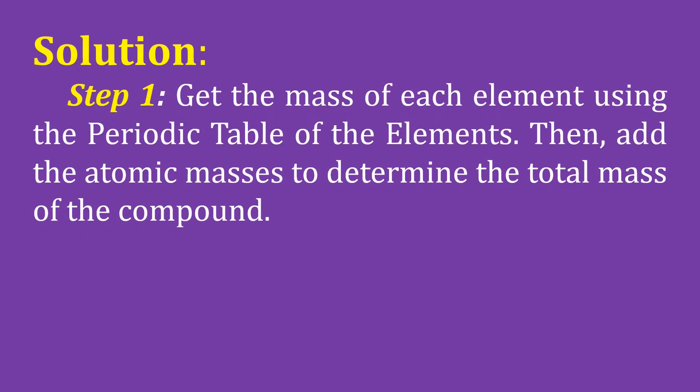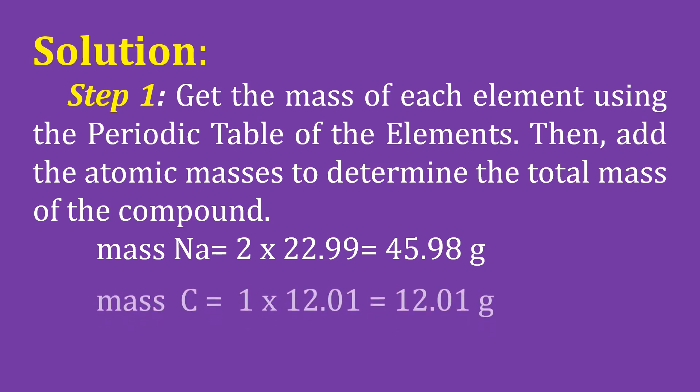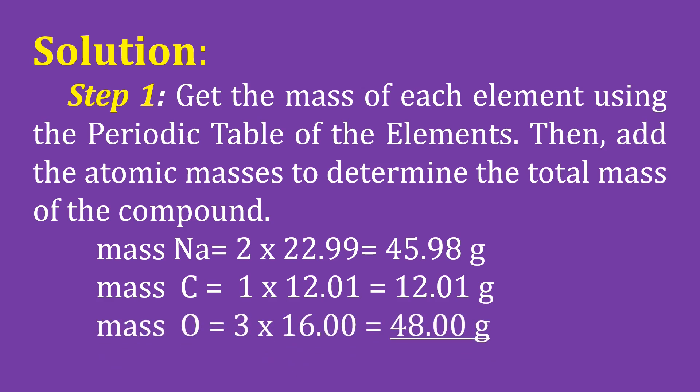Step 1: Get the mass of each element using the periodic table of the elements. Then add the atomic masses to determine the total mass of the compound. Mass of sodium: 2 times 22.99 equals 45.98 grams. For the mass of carbon: 1 times 12.01 equals 12.01 grams. And for the mass of oxygen: 3 times 16 equals 48.00 grams. We need to add all the atomic masses, then we have the total mass of 105.99 grams.